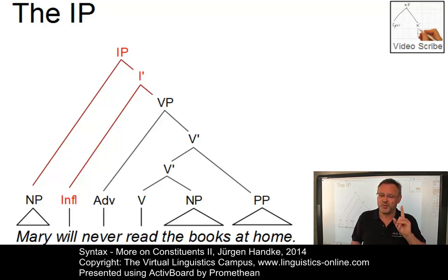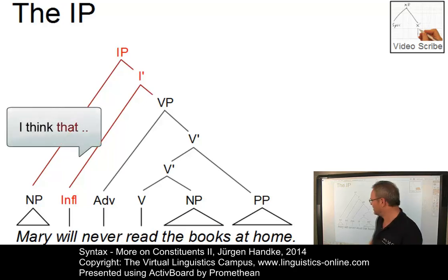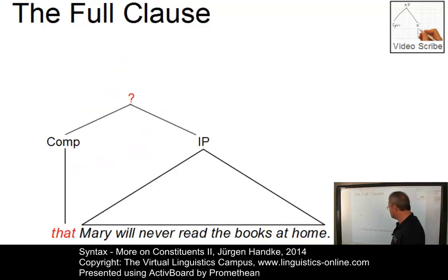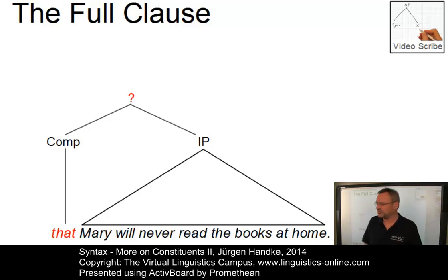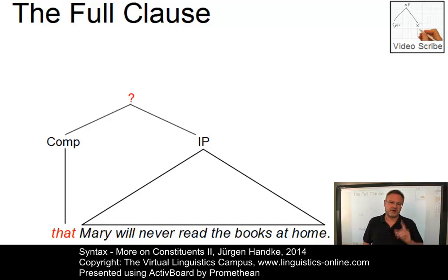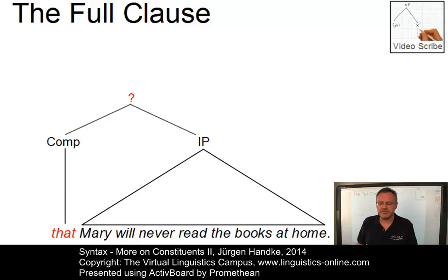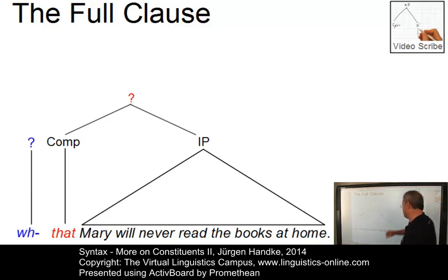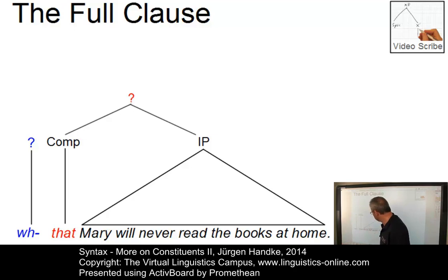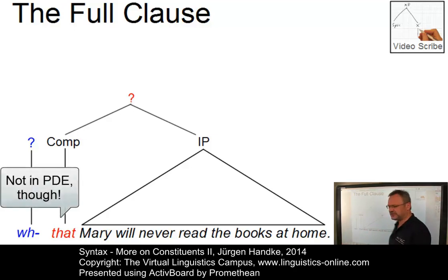We are not ready yet. What happens if a complementizer introduces the clause, as in: I think that Mary will never read the books at home? The simplest solution is to make the complementizer and the inflectional phrase daughters of a common mother node — indicated by a question mark here — because we still have to decide the label for this mother node. However, there is cross-linguistic evidence that such an analysis is too simple. For example, there are languages with sentence-initial WH elements that can stand even before the complementizer — elements like who, which, why, how — which can introduce a full clause such as that Mary will never read the books at home.